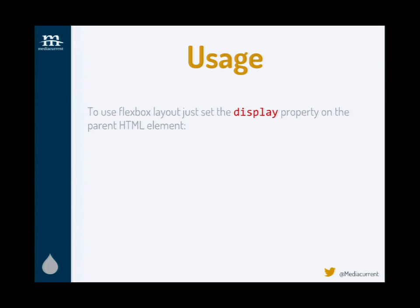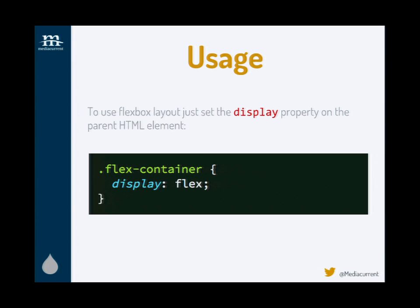The usage is pretty straightforward. We have the display property in CSS — block for block-level elements, inline for inline elements. For Flexbox, the display property is set to flex. If you simply set the display property to flex on a container — whether it's a div or an ordered list — you have activated Flexbox and you're ready to start using it for this container and its immediate descendants. That's all it takes.